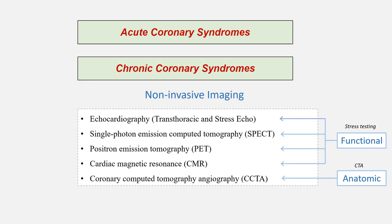Coronary syndromes can be divided into acute and chronic. Non-invasive stress testing plays a minor role in high-risk acute coronary syndrome patients and those diagnosed with acute myocardial infarction, as invasive testing with cardiac catheterization is the preferred strategy in those patients. But for patients with low or intermediate risk acute coronary syndromes and moderate to high-risk stable or ambulatory patients, non-invasive testing plays a major role. The established modalities include stress echo, nuclear myocardial perfusion imaging—either SPECT or PET—stress CMR, and cardiac CT angiography.